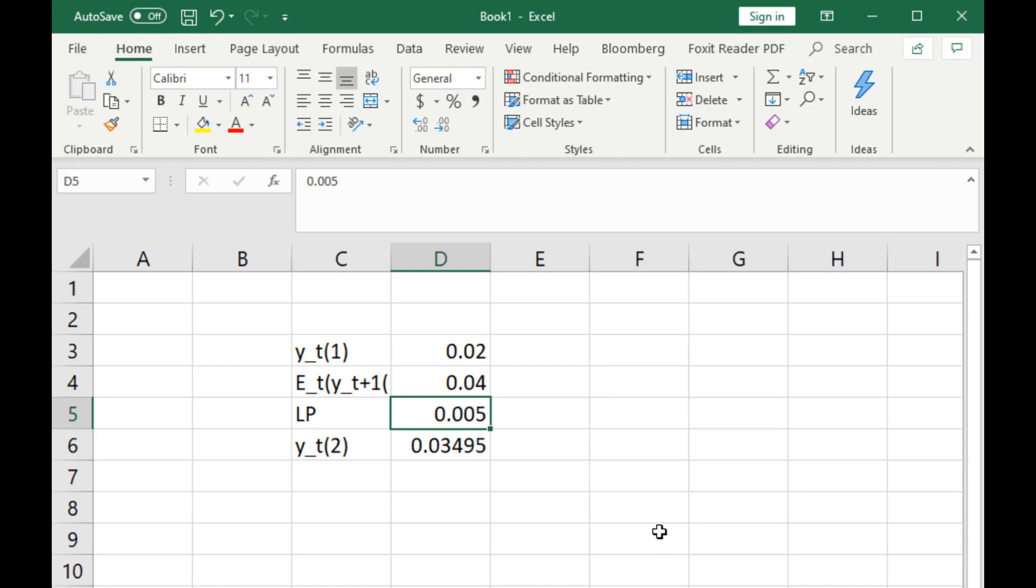So what does this mean for the shape of the term structure? Well now we actually see that the longer term rate is greater than the geometric average of the two short-term rates. Remember, the geometric average would just be this bit here. So then that would be three percent. Now we're adding a premium on top of that. So that will lead to the upward sloping term structure that we observe in the real world, therefore justifying the likely existence of a liquidity premium.